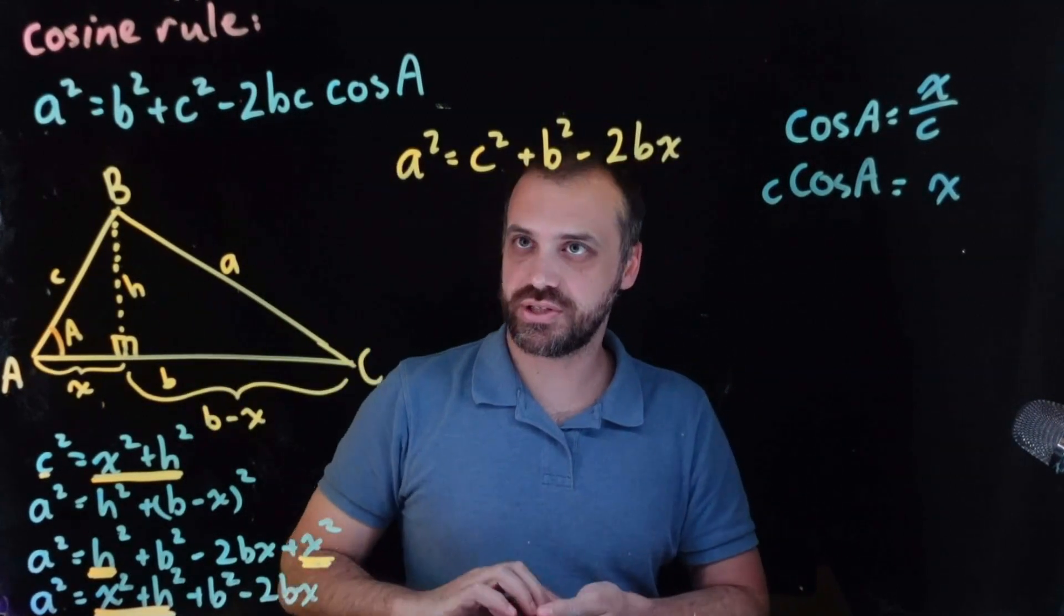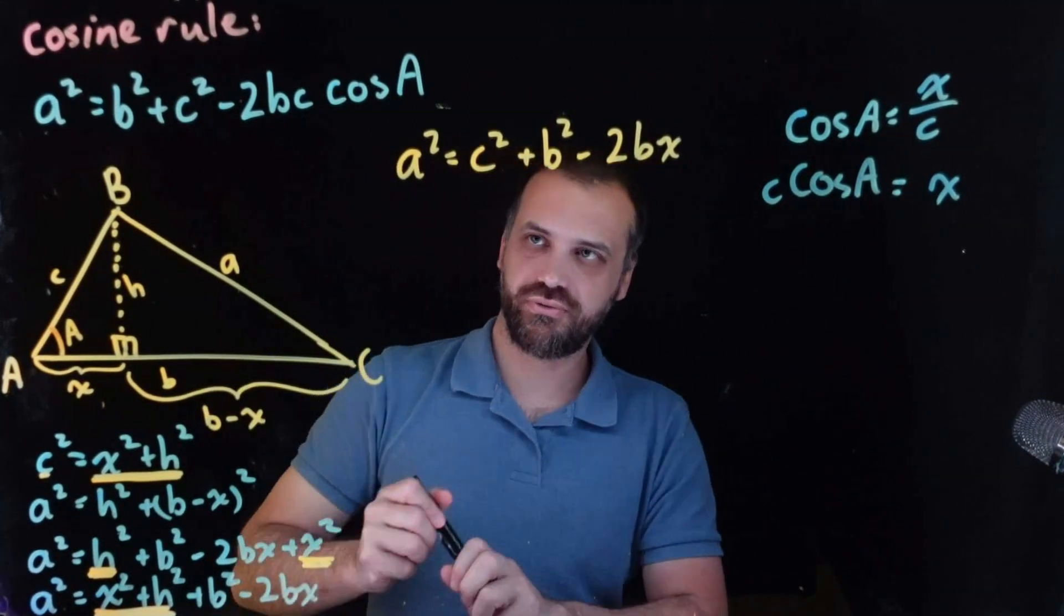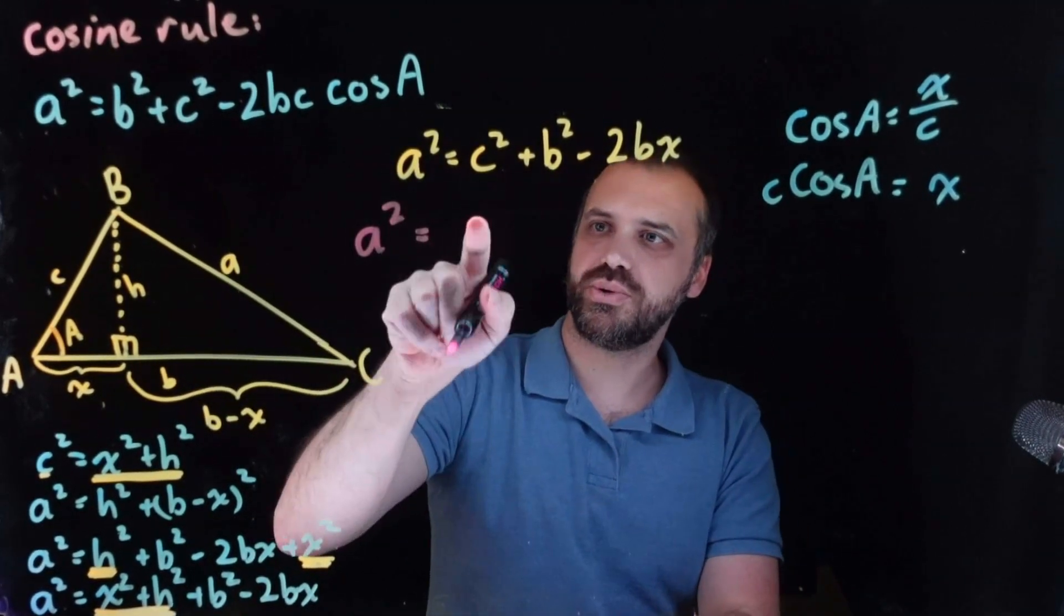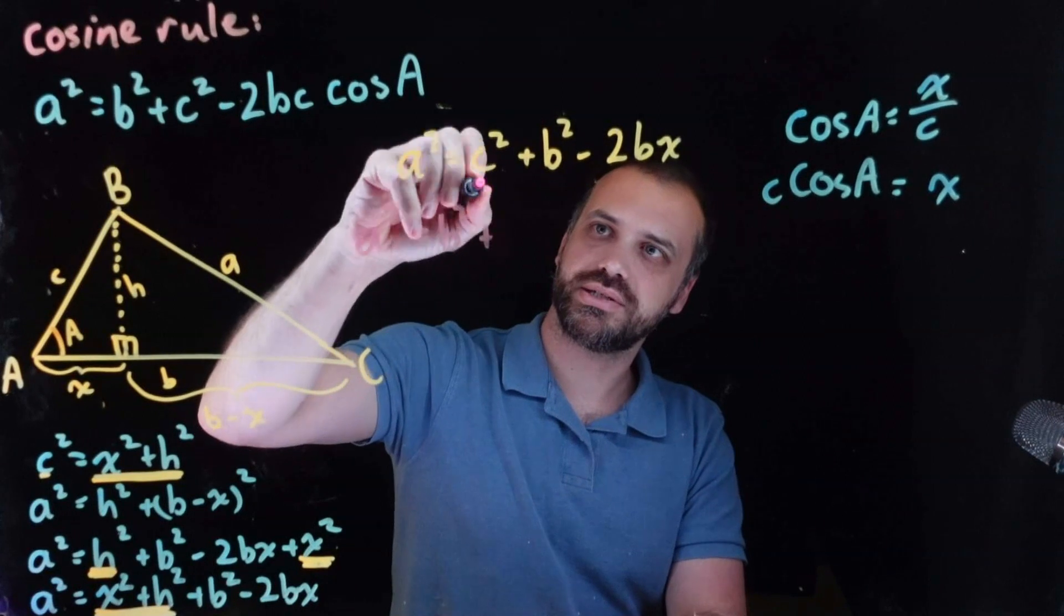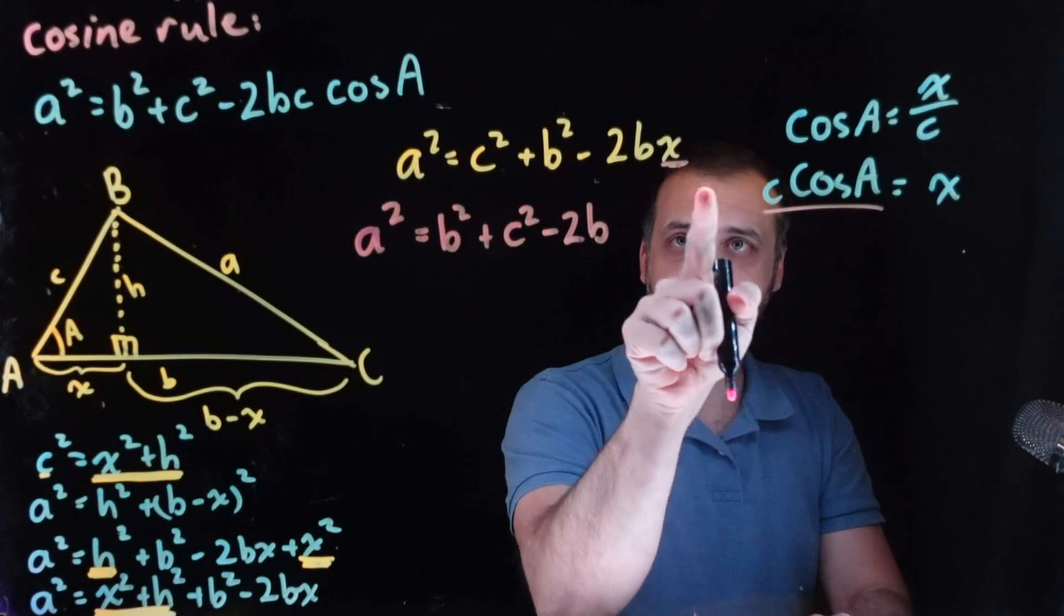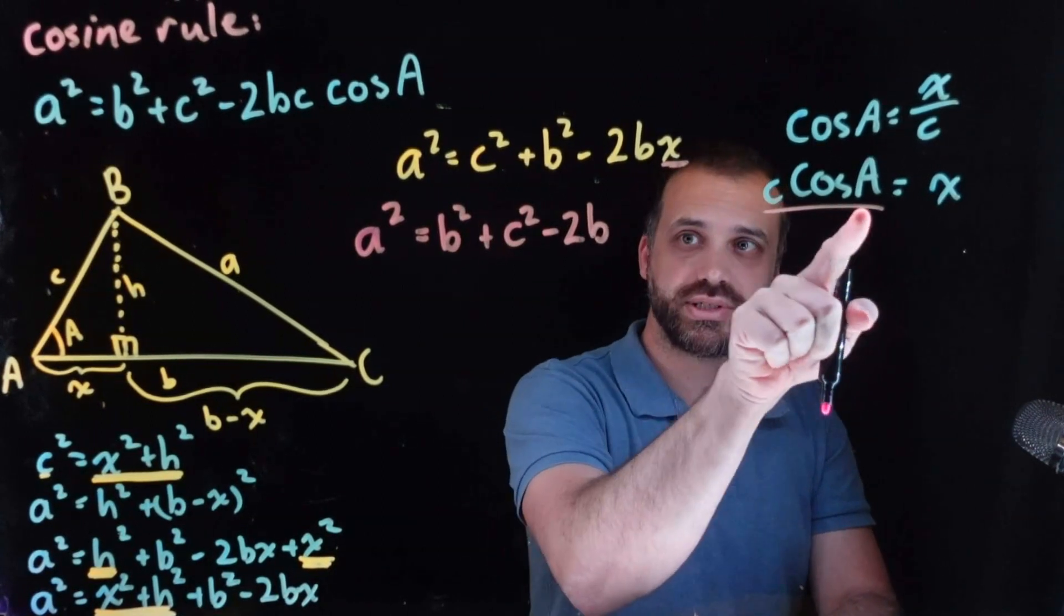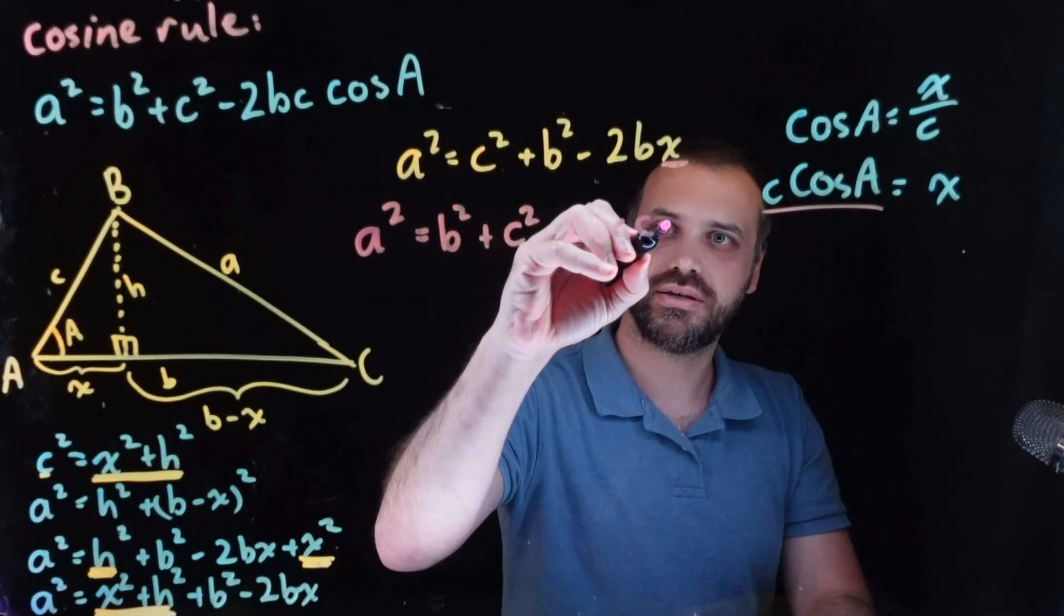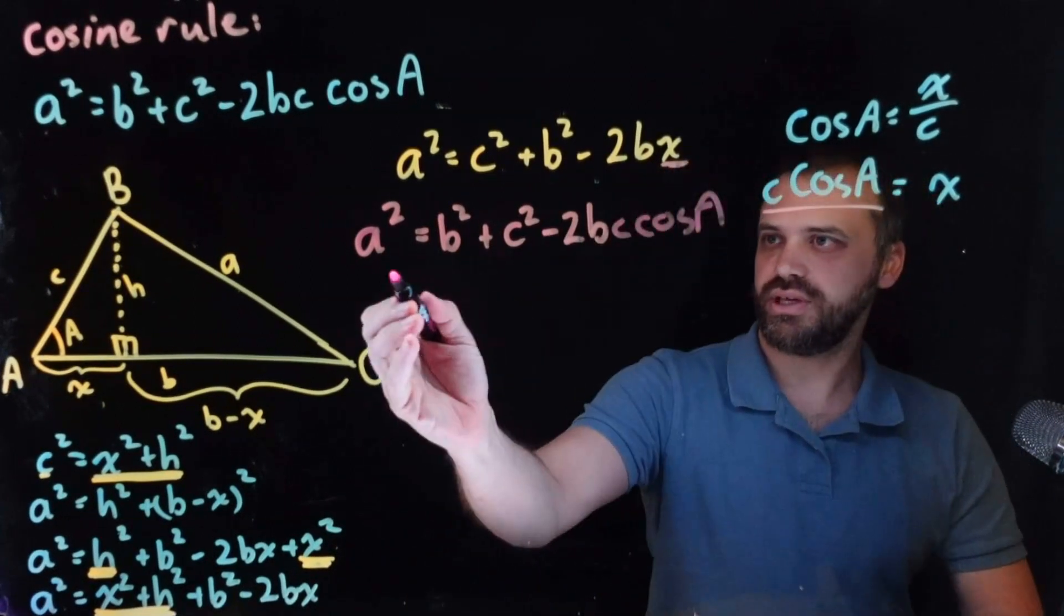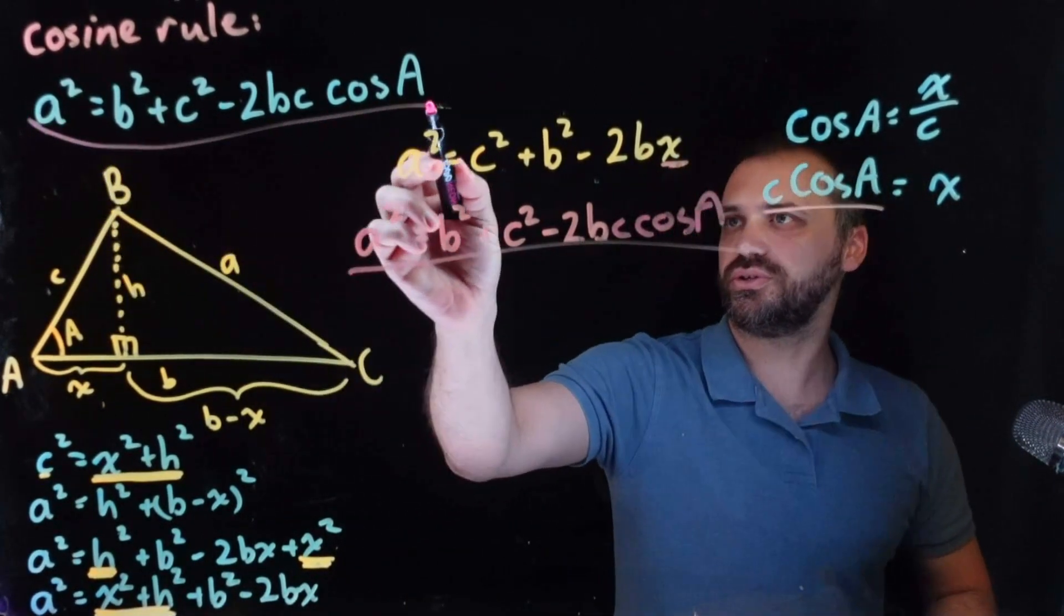So we can finish all of this off now. Let's do it in a different color because this is the big finale. A squared equals. Let's do the B squared first. Plus C squared minus 2B. And so this, C cos A, we can replace the X with C cos A. C cos A. This is equal to this.